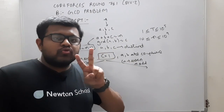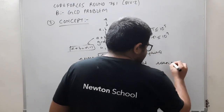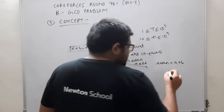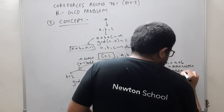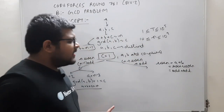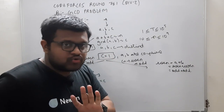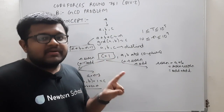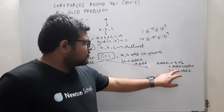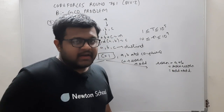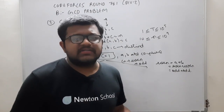Now if n minus 1 is even — meaning n is odd — we cannot split an even number into two even numbers because the GCD of two even numbers is at least 2, which would make GCD(a, b) at least 2, not 1, violating the condition. So we need to split the even number into two odd numbers using odd plus odd.